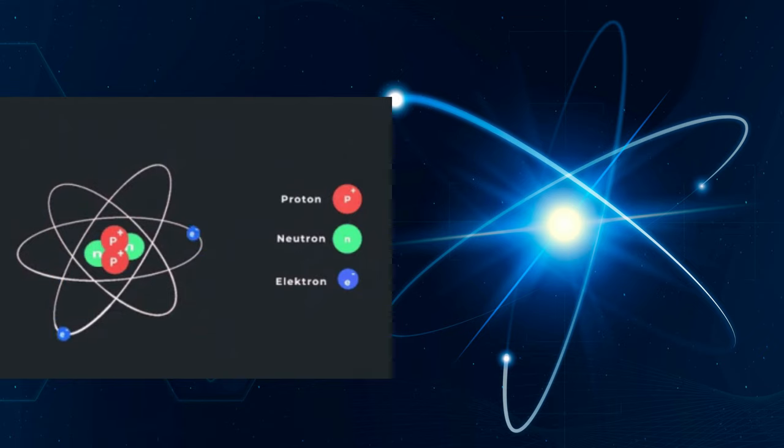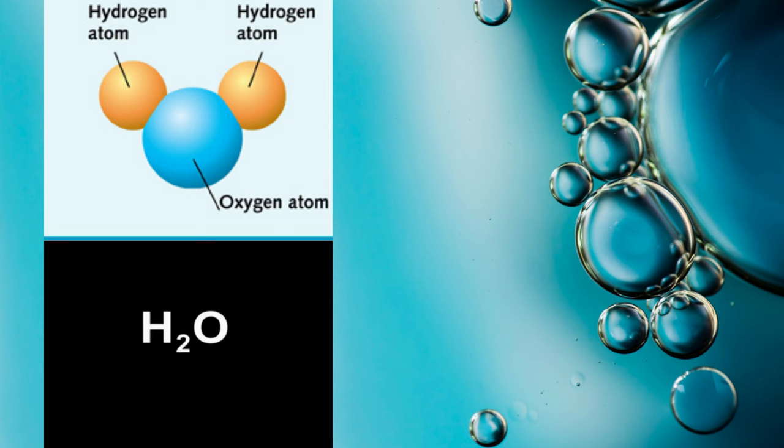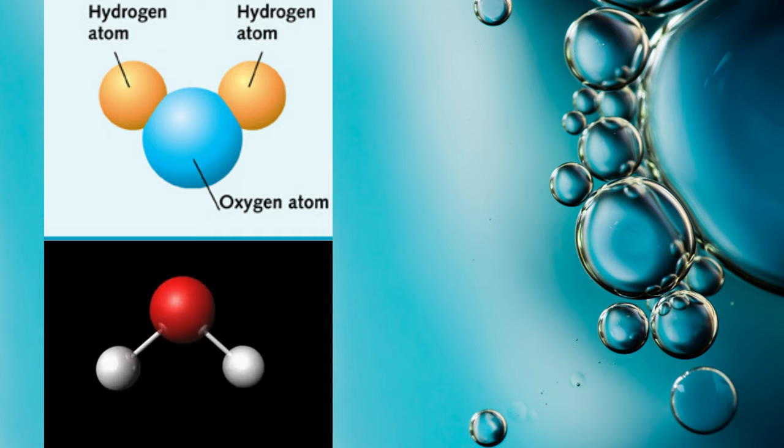For example, a water molecule is made up of two hydrogen atoms and one oxygen atom. The hydrogen atoms are bonded to the oxygen atom by covalent bonds.